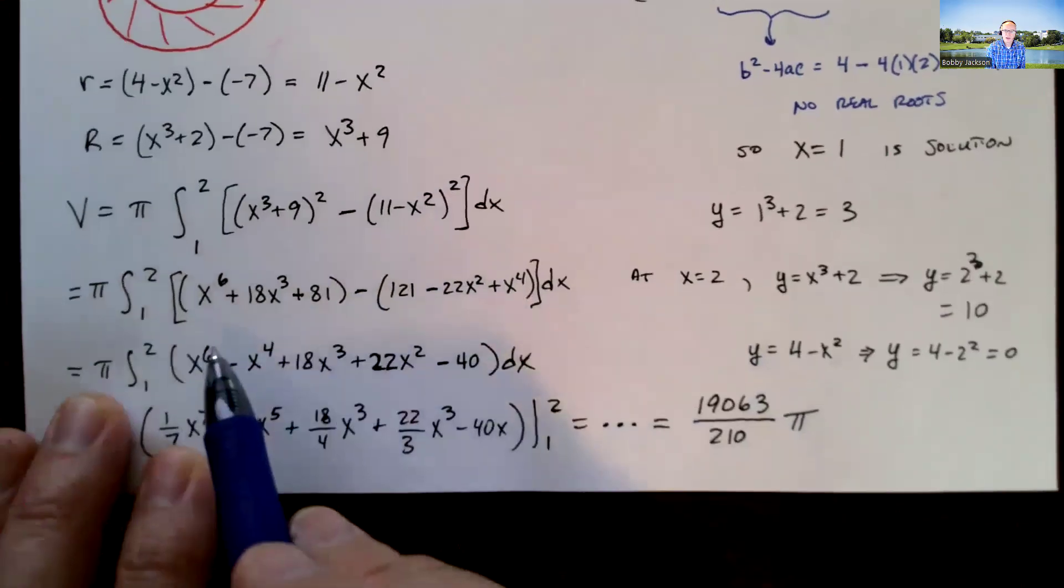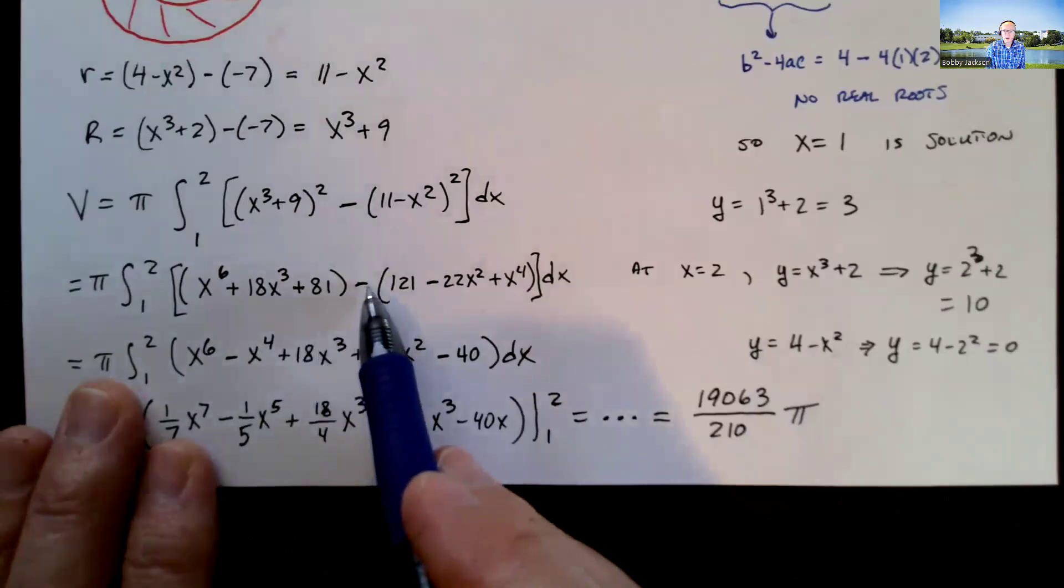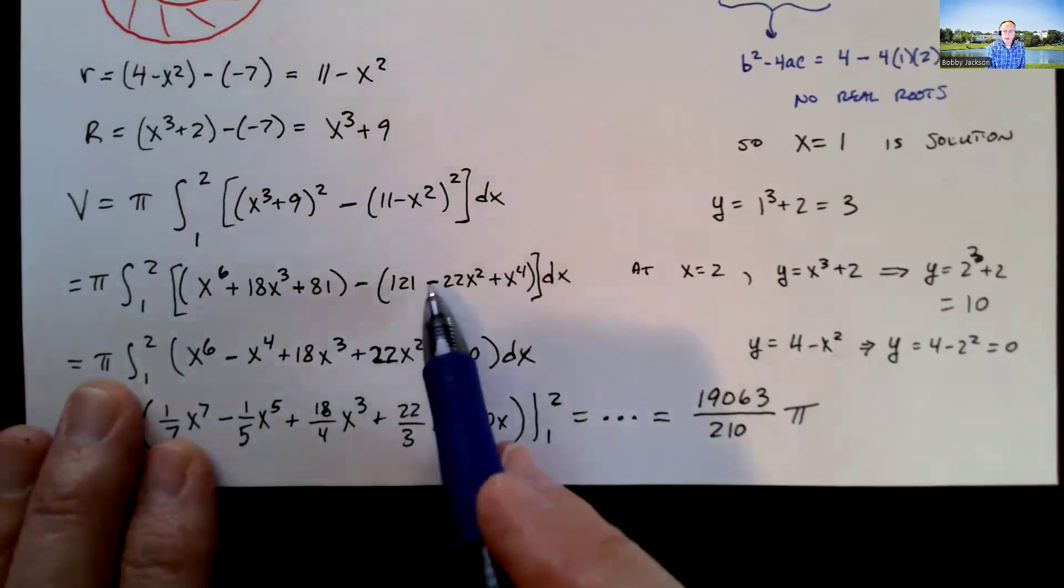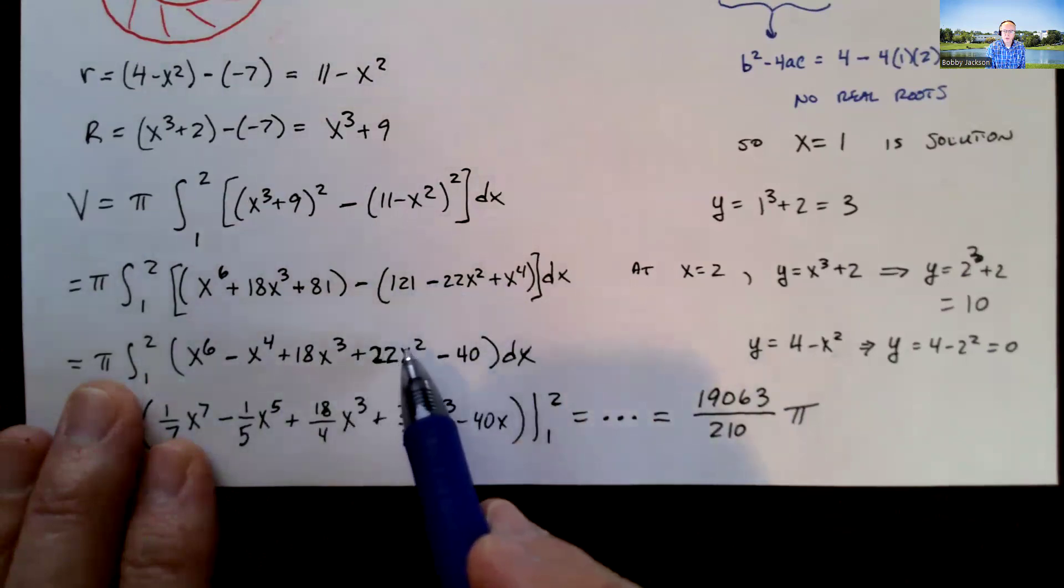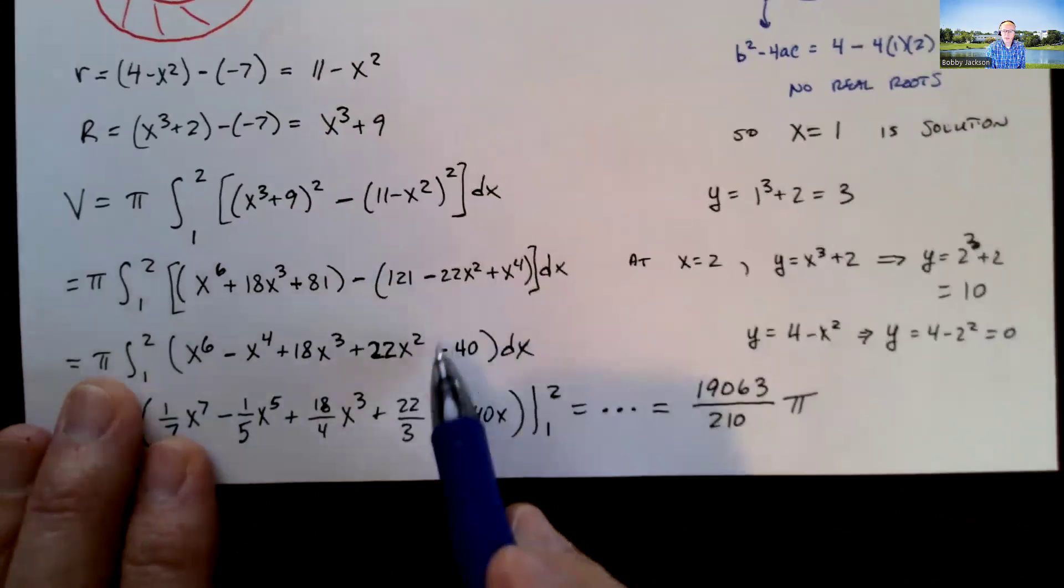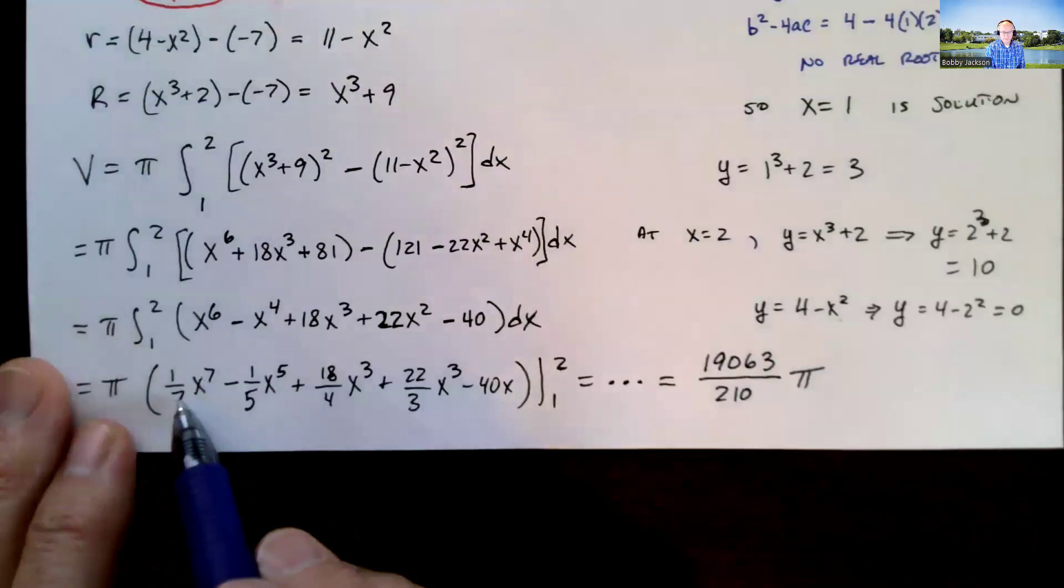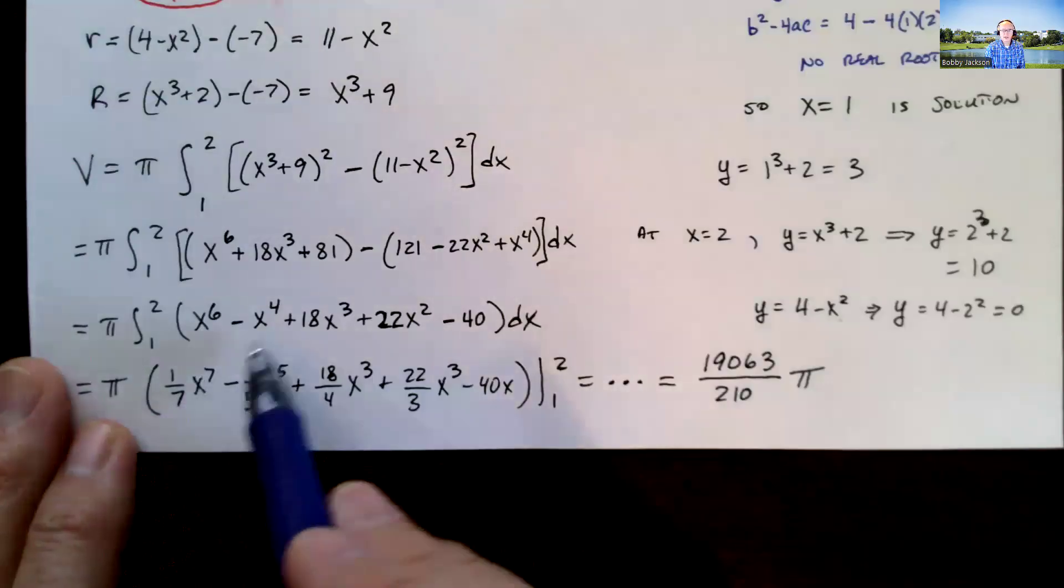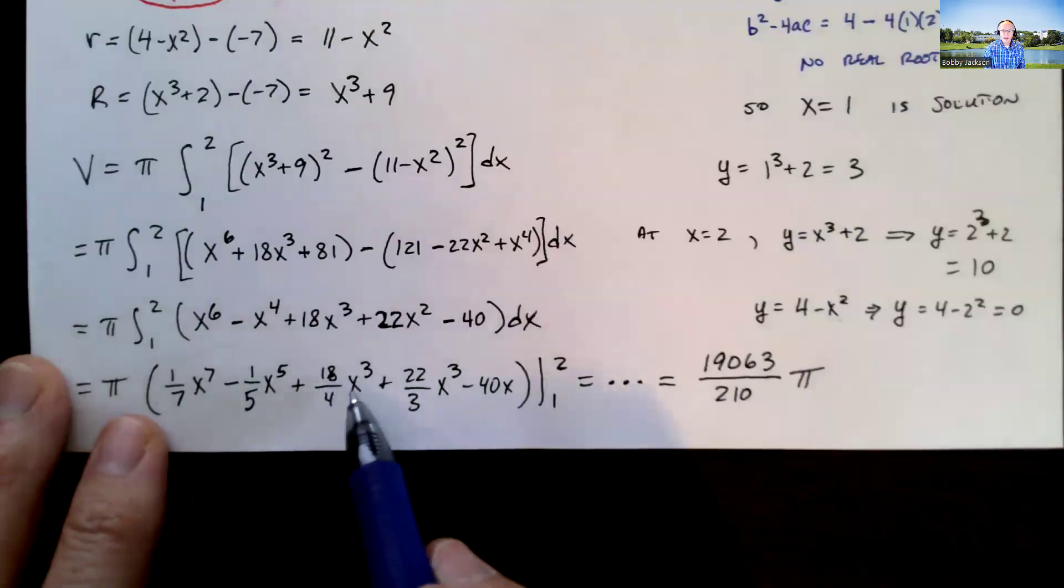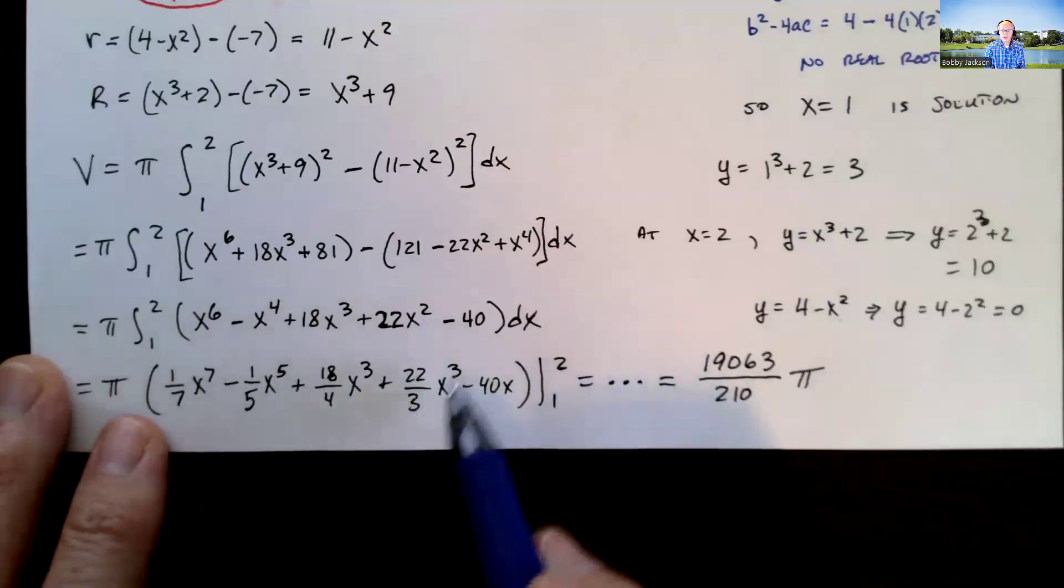Combine any like terms, which there's only constant terms. But I've got x to the 6th minus x to the 4th, 18x cubed minus a negative plus 22x squared. And then I have 81 minus 121 is negative 40. So that's what I'm integrating. The antiderivative is 1 7th x to the 7th minus 1 5th x to the 5th, 18 4ths or 9 halves x to the 4th.